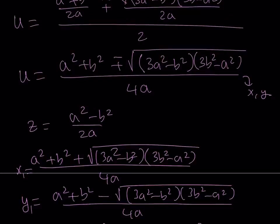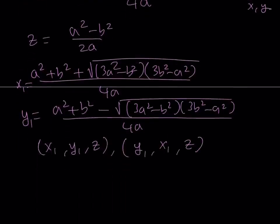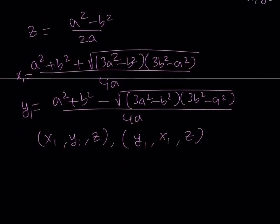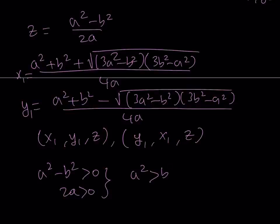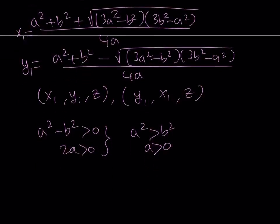Since we want the solutions to be distinct and positive, here's what we need. First, Z must be positive, so A²−B² must be positive and 2A must be positive at the same time. This gives us A²>B² and A>0. The other case — both negative — would make our solutions negative, so that doesn't work.